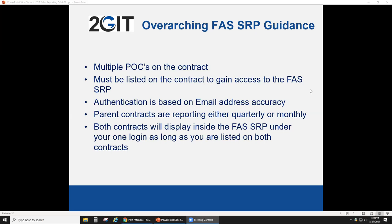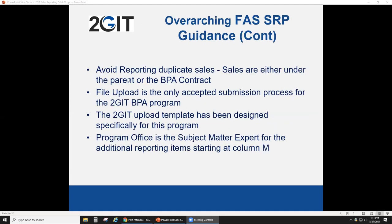Your parent contracts are quarterly reporting. This is a change under the to-Get BPA where you'll be reporting monthly through a file upload feature. Both contracts should display in the SRP under one login as long as you're listed on both. Avoid reporting duplicate sales — sales are either under your parent or under your BPA. You can't report them on both contracts or we'll have to do a bunch of sales adjustments later.